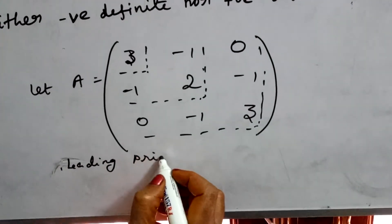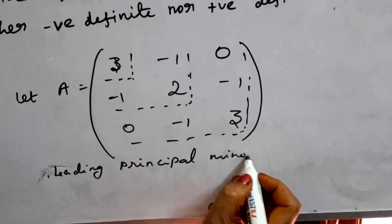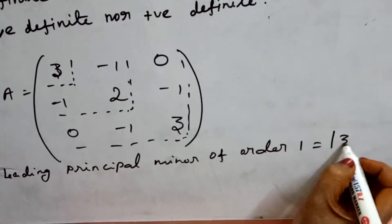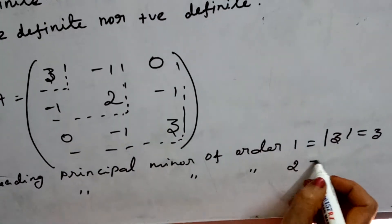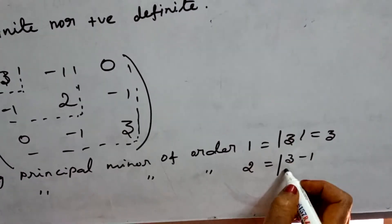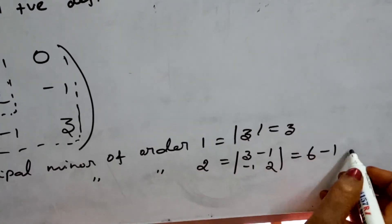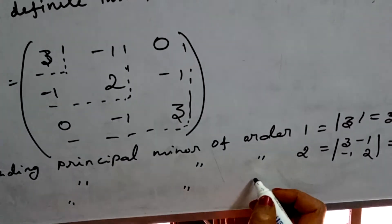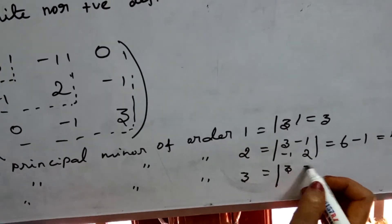The leading principal minor of order 1 = det([3]) = 3. The leading principal minor of order 2 = det([[3, -1], [-1, 2]]) = 3×2 minus (-1)×(-1) = 6 minus 1 = 5.